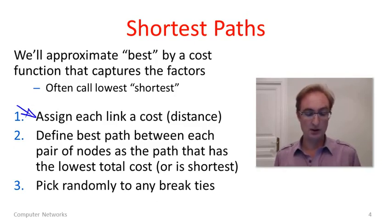First of all, we'll assign to every link a cost or a distance. And we'll do that to capture the factors we care about. It's literally distance if we wanted to minimize the latency through the network. If you made it all one, you would minimize the hops through the network if every link was one.